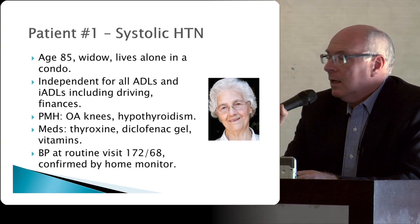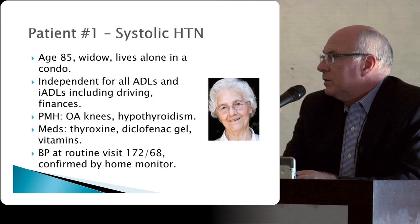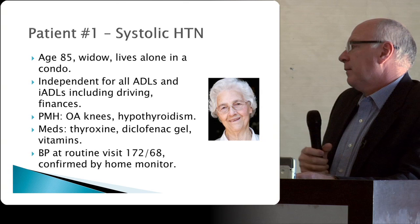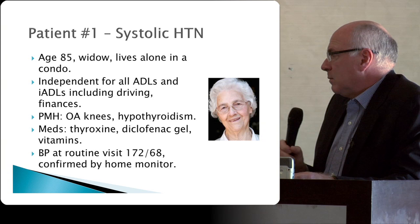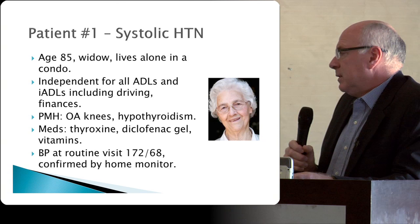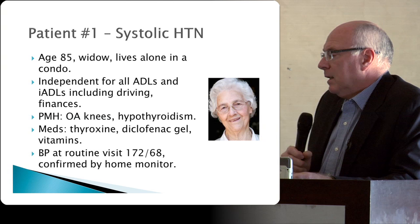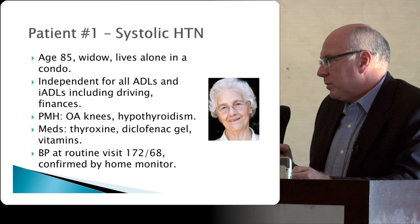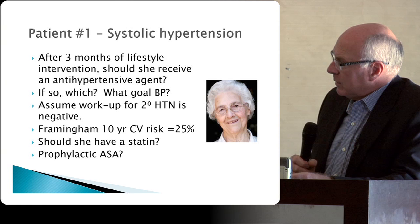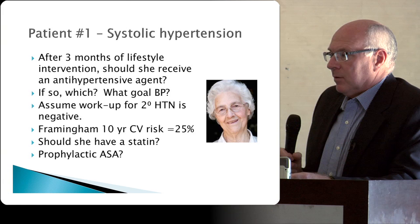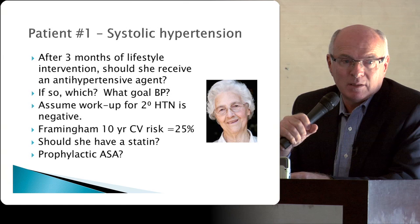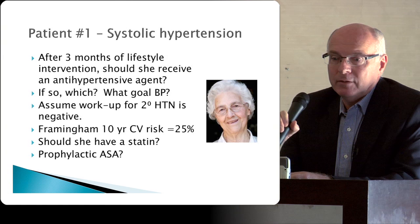I'm going to give you three patients and come back to them later. Patient one: an 85-year-old widow living alone in a condo, independent for everything, drives a car, doesn't need help from family. She has osteoarthritis in her knees and hypothyroidism, on thyroxine and diclofenac gel. Her blood pressure at multiple routine visits has averaged around 172 over 68, confirmed at home, with secondary causes ruled out. After three months of lifestyle intervention, should she receive an antihypertensive agent?